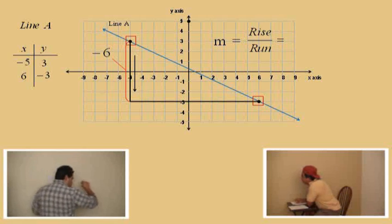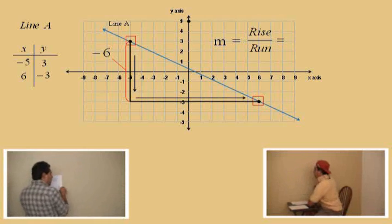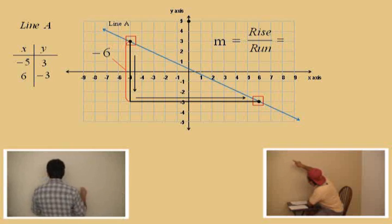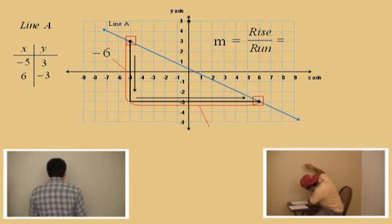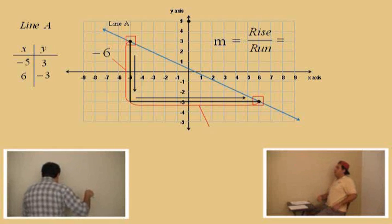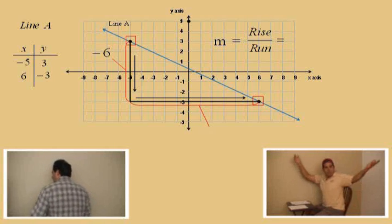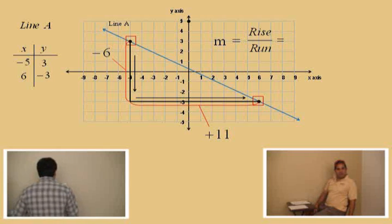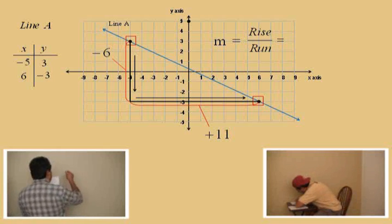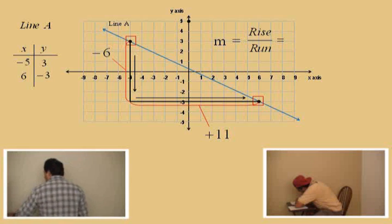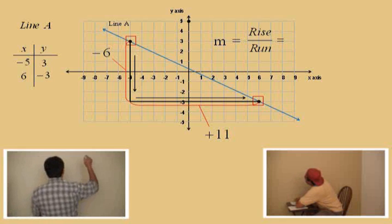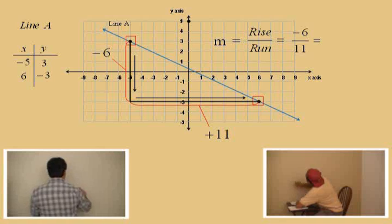And now, we have to go to the right. We came down, now we're going to go to the right. Charlie, start counting. How many spaces do we go, Charlie? Eleven. Very good. And since we're moving to the right, we say plus eleven. So, our rise over run ends up being negative six over eleven, because we came down six and right eleven. And so, we say our slope is negative six over eleven.